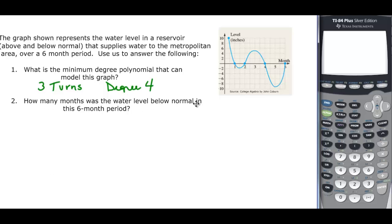How many months was the water level below normal in the six-month period? Well, the x-axis is normal. Here's one month, then it's above from two to three and three to four. Then from four to five that's below and from five to six is below, so that gives us two. We have a total of three months.